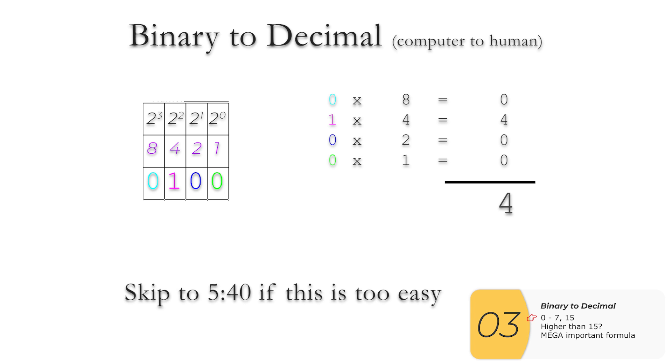0100, that means 0 eights, 1 four, but 0 twos, and 0 ones. I add it all up together, and I get 4. 0101, that means I have 1 four, and 1 one, but no eights and no twos. So I add up my 4 and my 1, and I get 5. 0110, that means I have 1 four, and 1 two, but no eights and no ones. So I have a 4 and a 2, add it together, and I get 6. Finally, 0111, that means I have a 4, a 2, and a 1, but no eights. Add it all up together, and I get a 7. And it goes on and on.